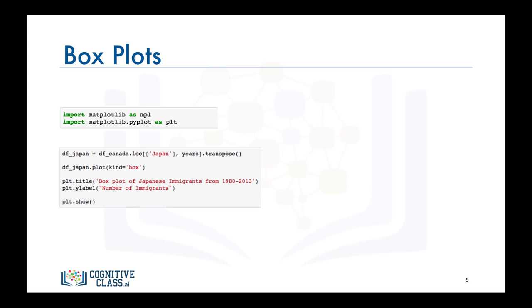Following that, we call the plot function on DF_Japan and we set kind equals box to generate a box plot. Then to complete the figure, we give it a title and we label the vertical axis. Finally, we call the show function to display the figure.